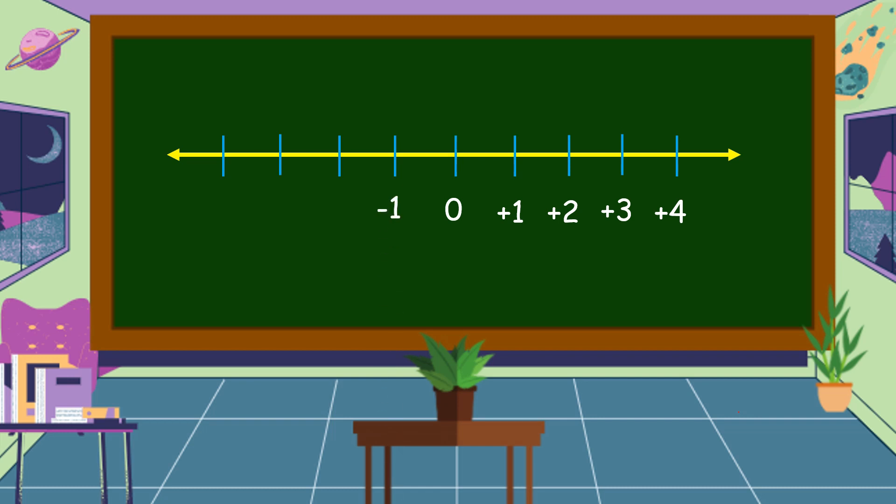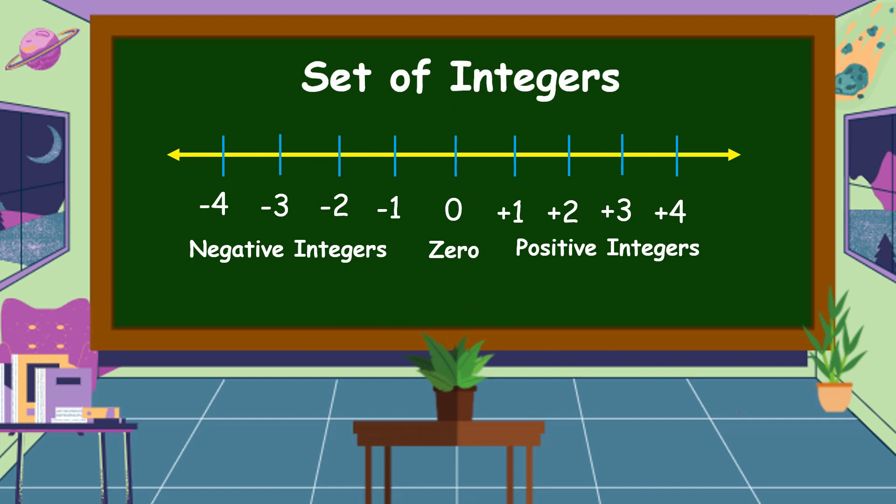To the left of zero, we have negative 1, negative 2, negative 3, negative 4. To the right of zero are the positive integers, while to its left are the negative integers. These are the sets of integers.